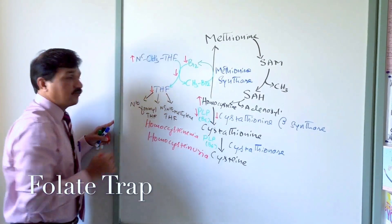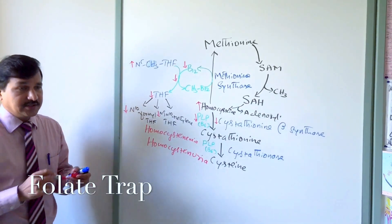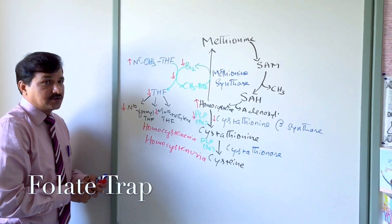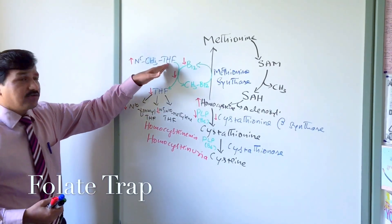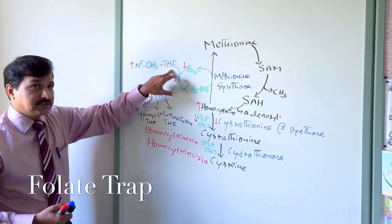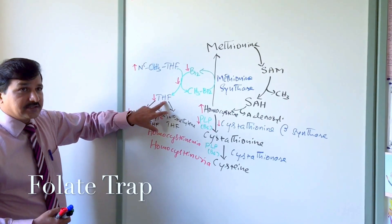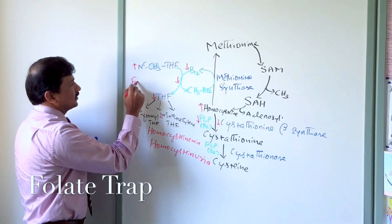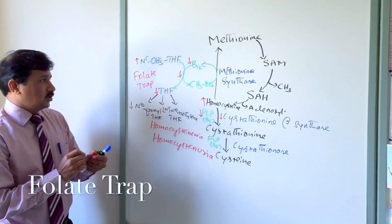Overall, there will be a decrease in free tetrahydrofolate, which in turn decreases other THF derivatives and affects metabolic reactions. This means that folate is technically present but effectively not available to make other THF derivatives — this is called functional folate deficiency. Because B12 deficiency traps folate as N5-methyl THF and prevents its conversion to free THF, this entire concept is called the folate trap.